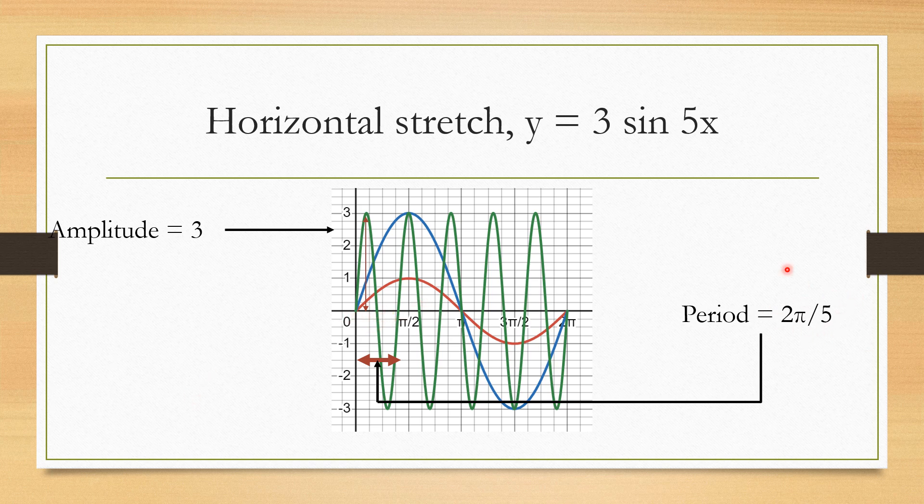So we say the period is 2 pi over 5. You can also just look at this distance. But one way to do it is take the number 5 and you take 2 pi divided by it. So we can see how now this is a horizontal compression, not a stretch, of the graph.